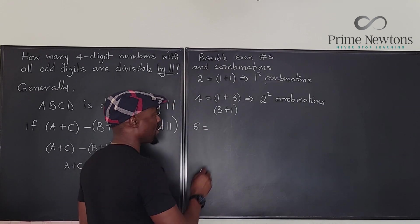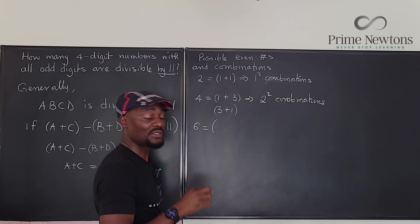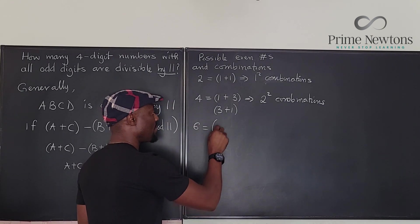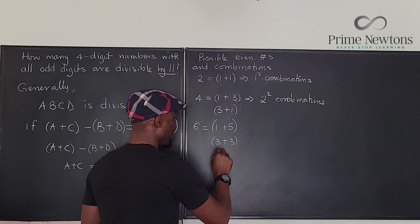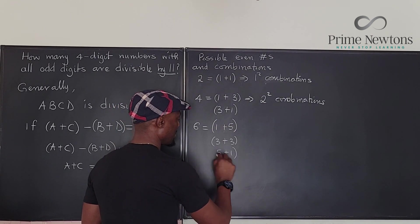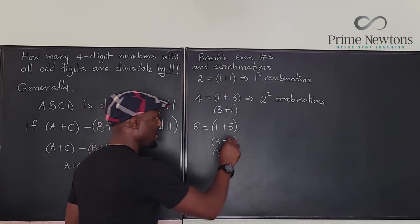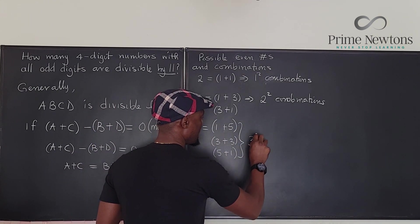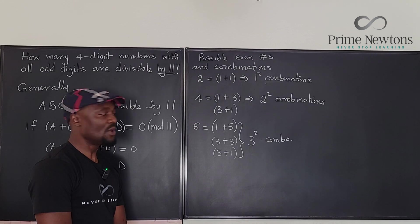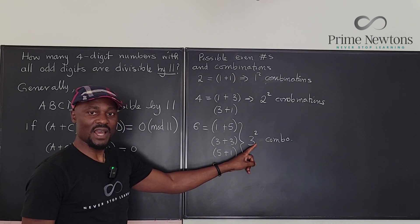For 6, possible options are 1+5, 5+1, and 3+3. This is the maximum number, so this is 3. This implies 3 squared combinations. So this is 1, this is 4, and this is 9.